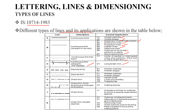The next type is dashed thick lines, used for hidden outlines and edges. We also use dashed thin lines for the same purpose — hidden outlines and edges.